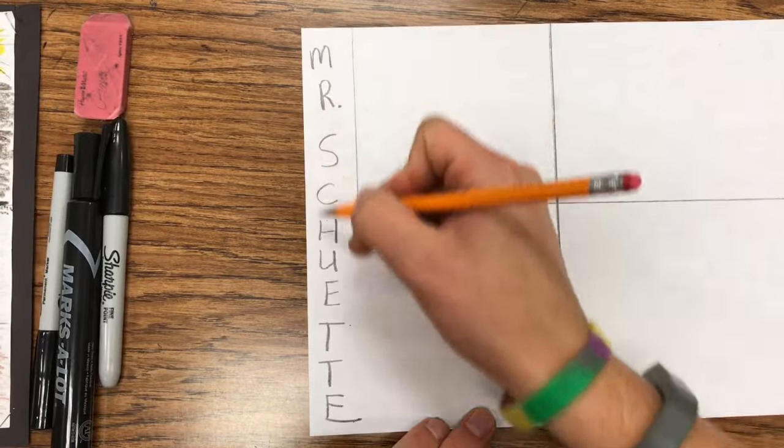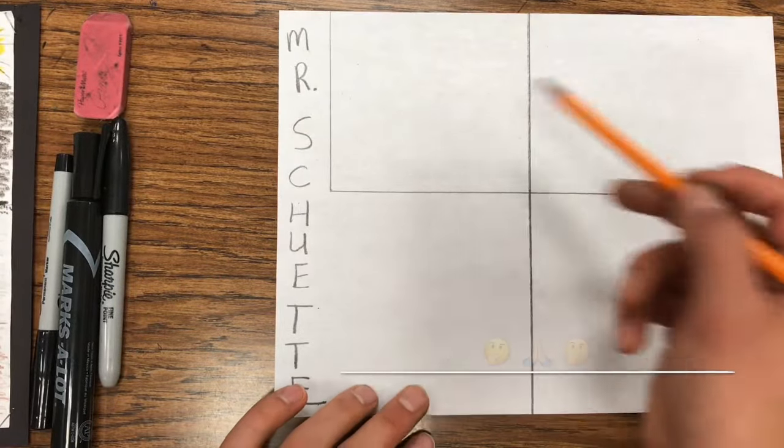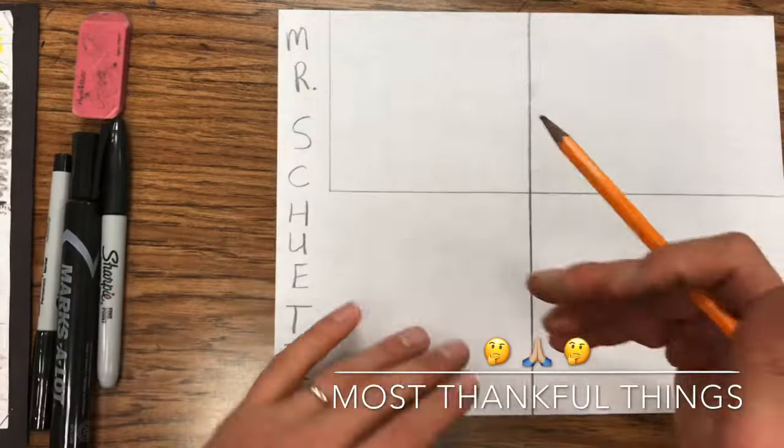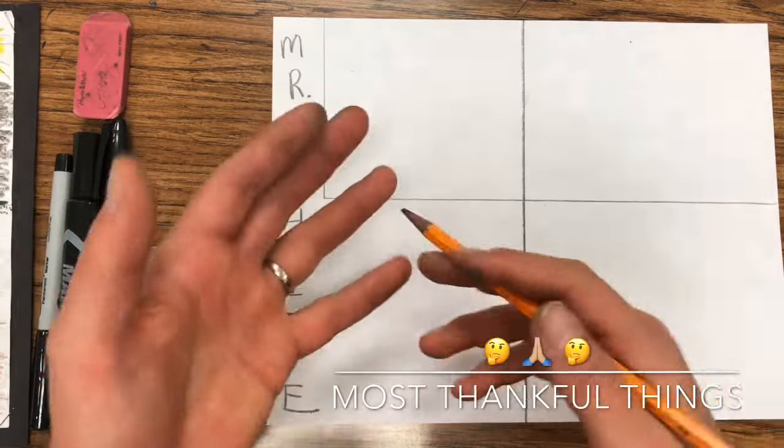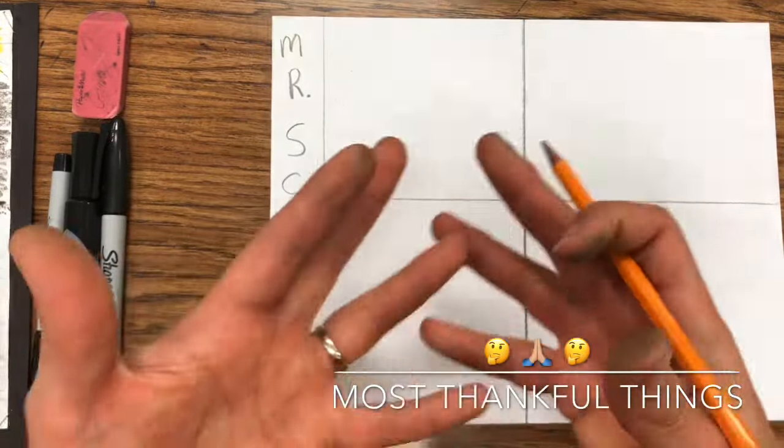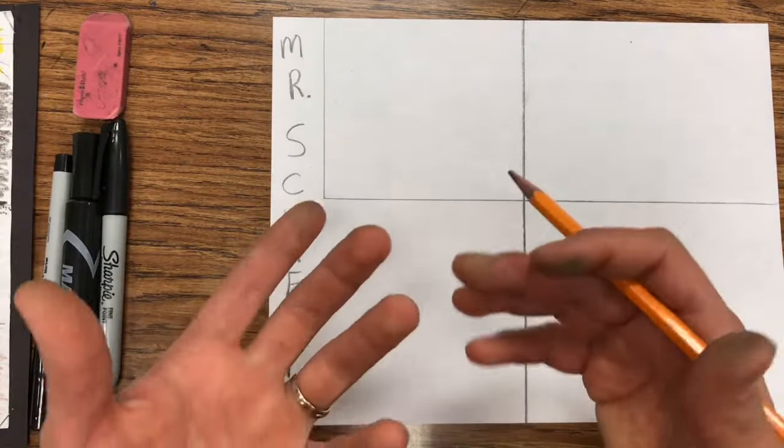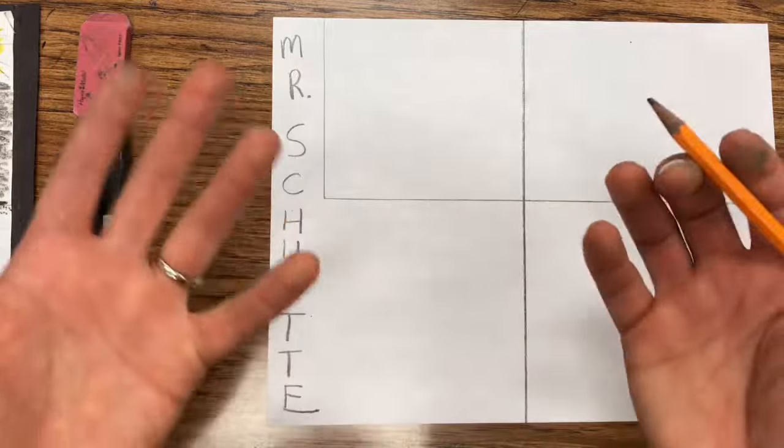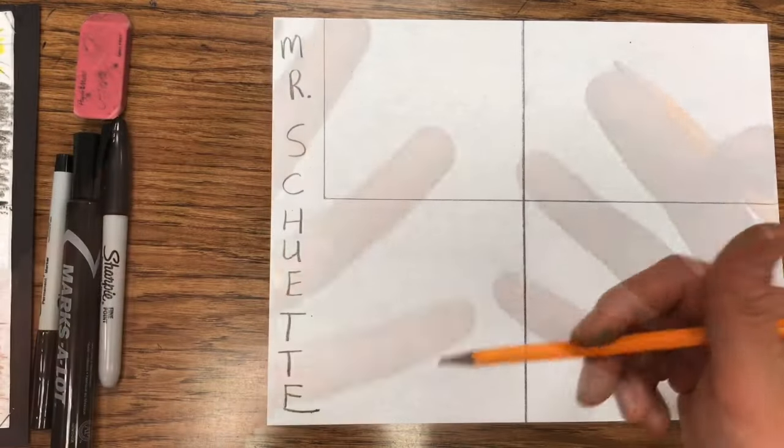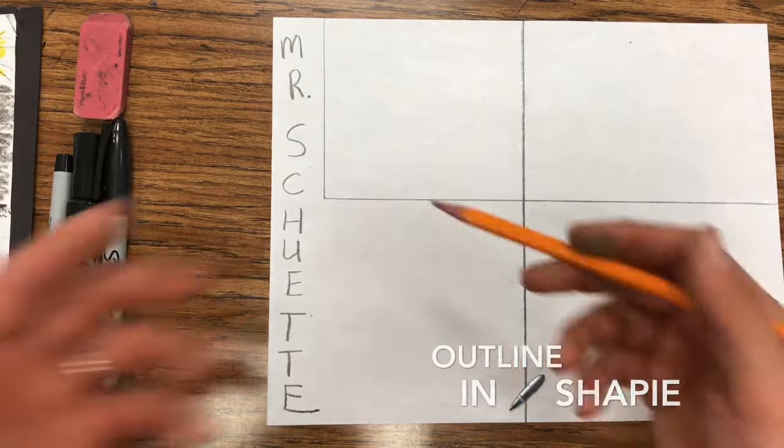On the side here, and then it breaks apart into four different quadrants where you're thinking of things that you're most thankful for. This can be art-related, family-related, or just your life in general. I always tell the kids they can do one silly one if they want, like 'I really like cheeseburgers.'